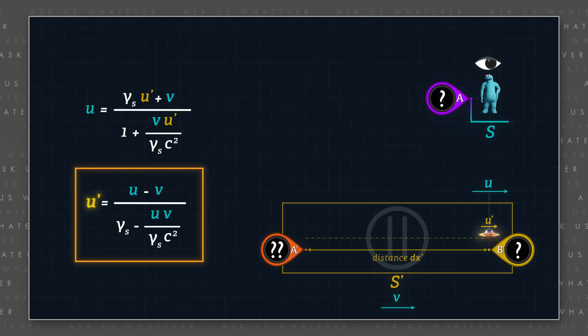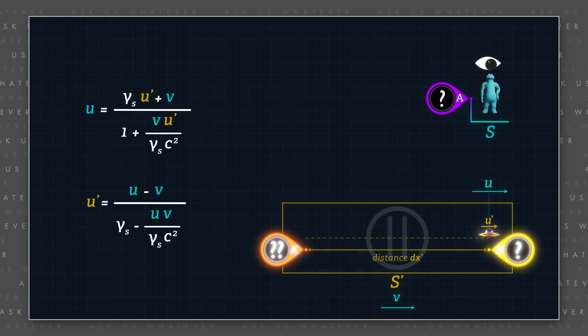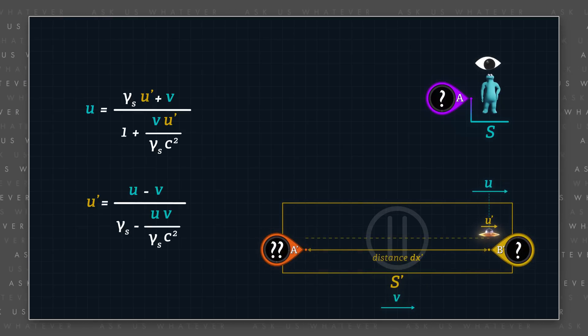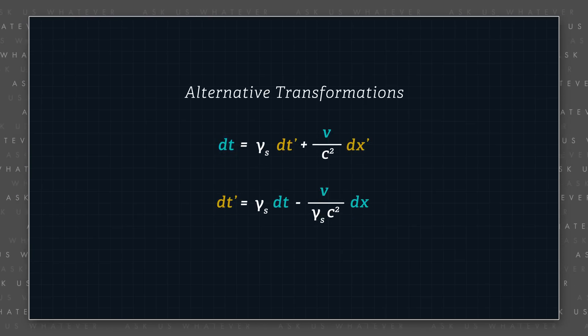However, the output of this formula u prime, if actually measured in frame s prime, would involve two Einstein synchronized clocks in frame s prime.